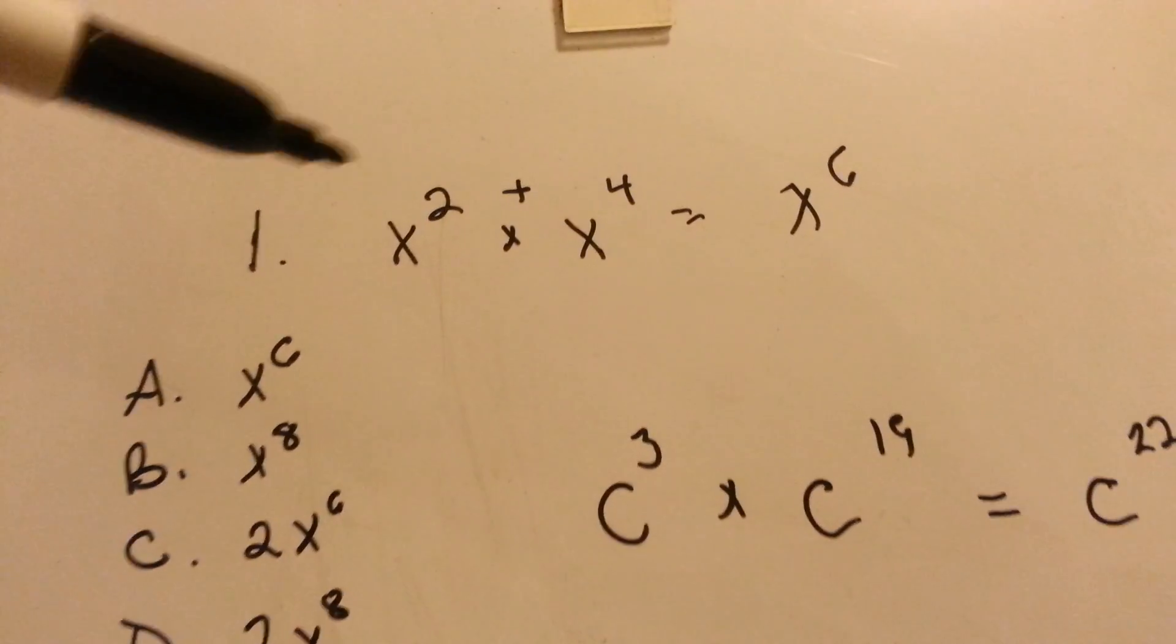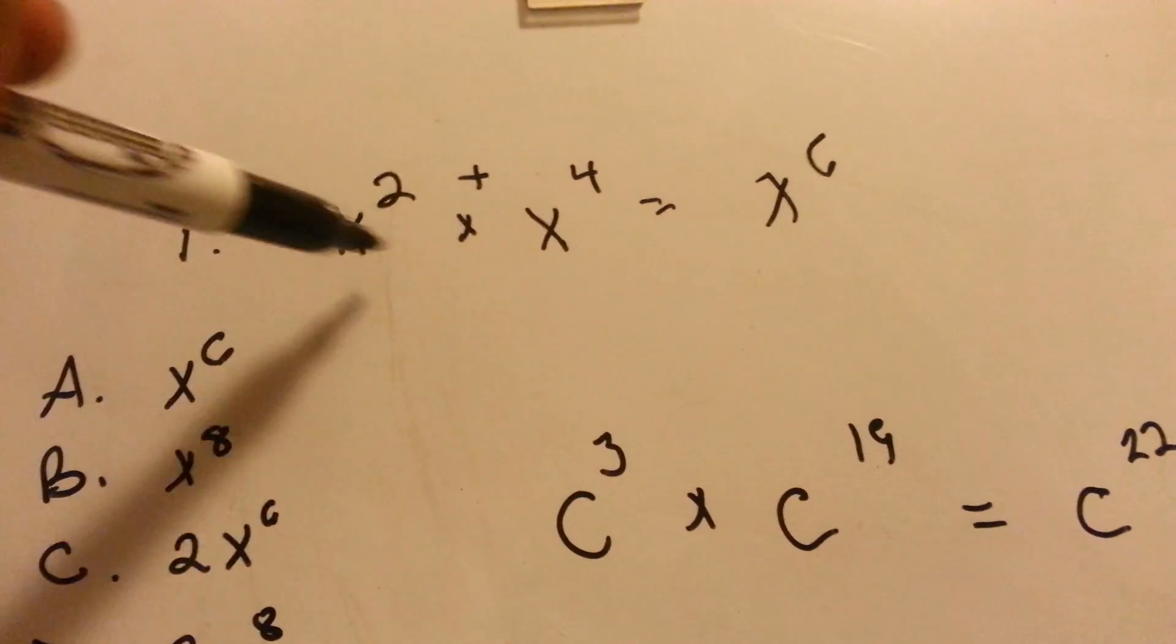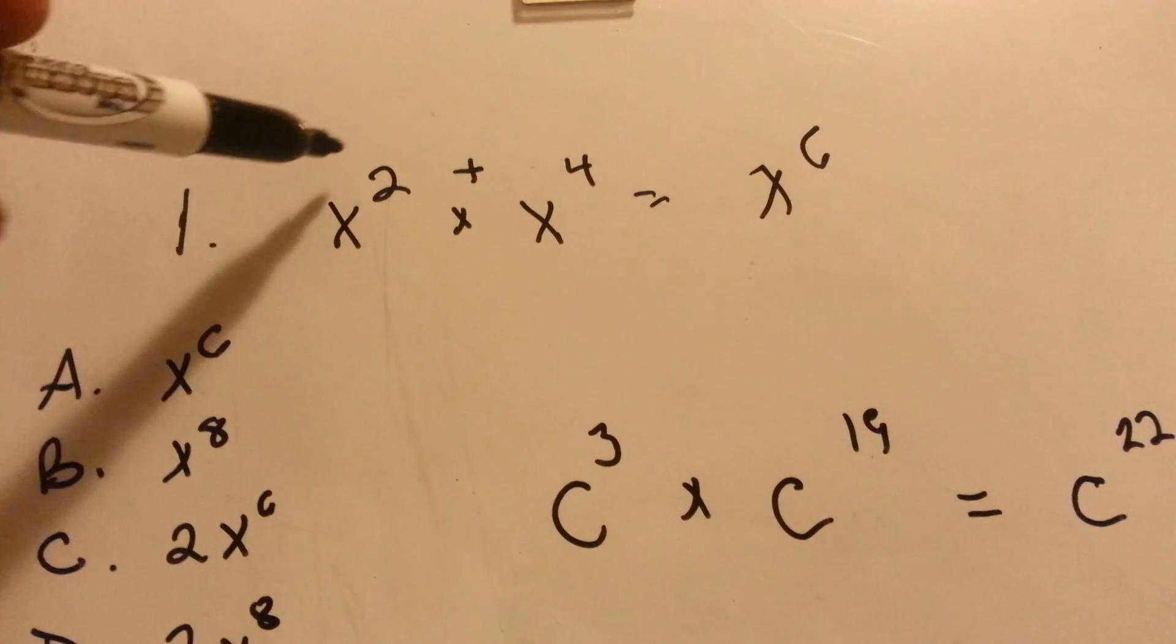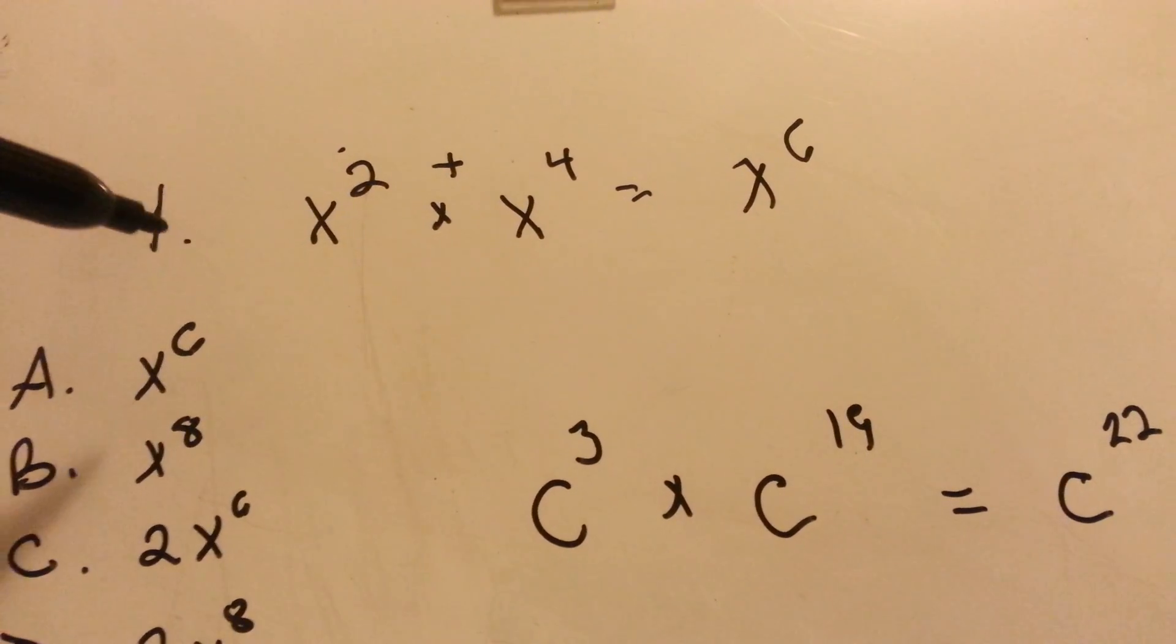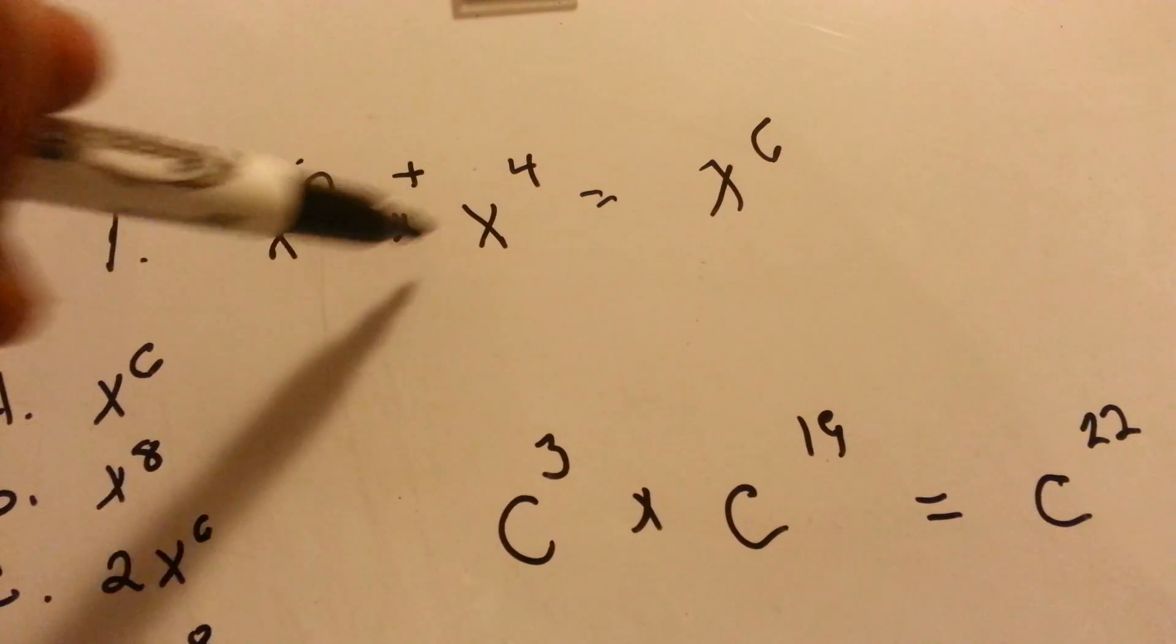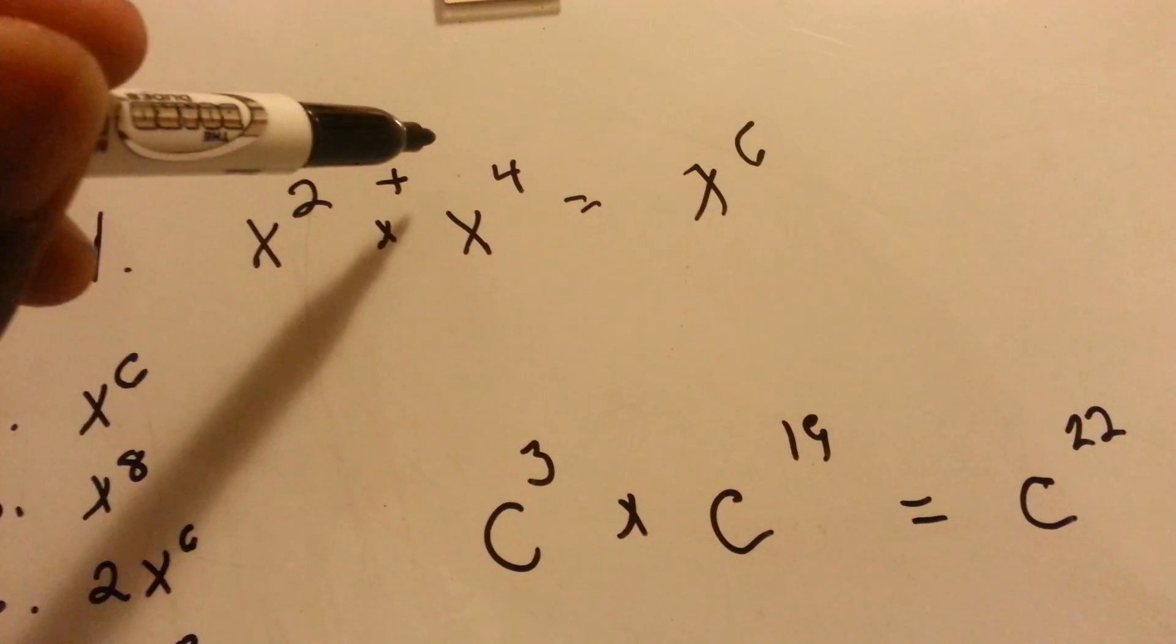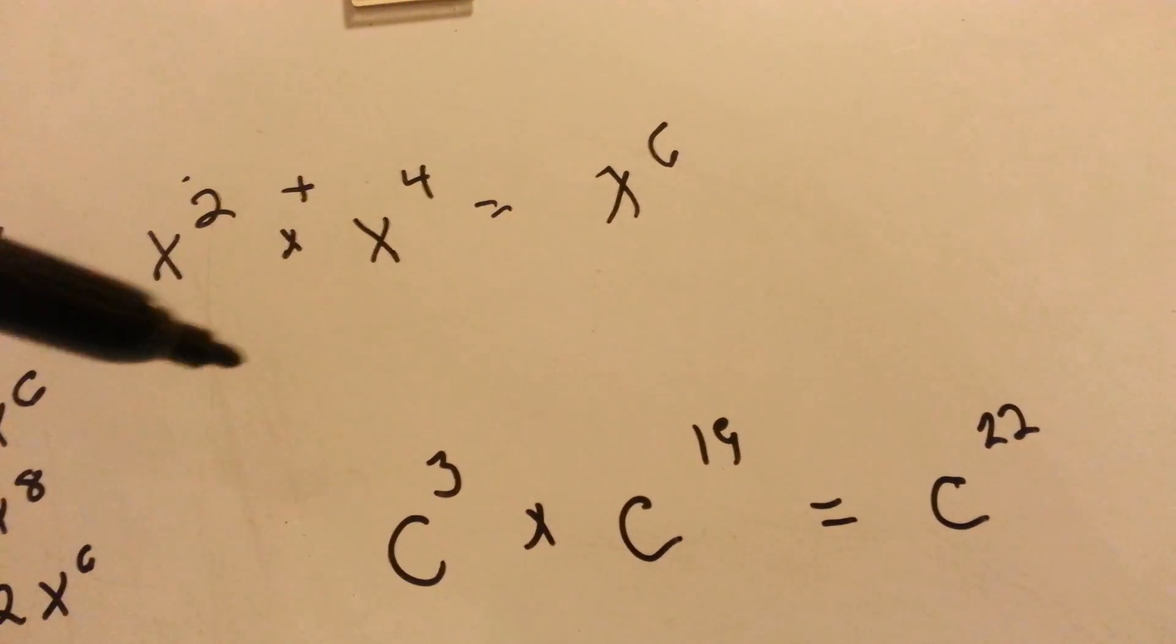So it boils down to if you see something like this and you have exponents with the same x, they each have x to the something power. That little number up top is called the exponent. When you have two numbers multiplying each other with exponents, you add the exponents, x to the sixth power.